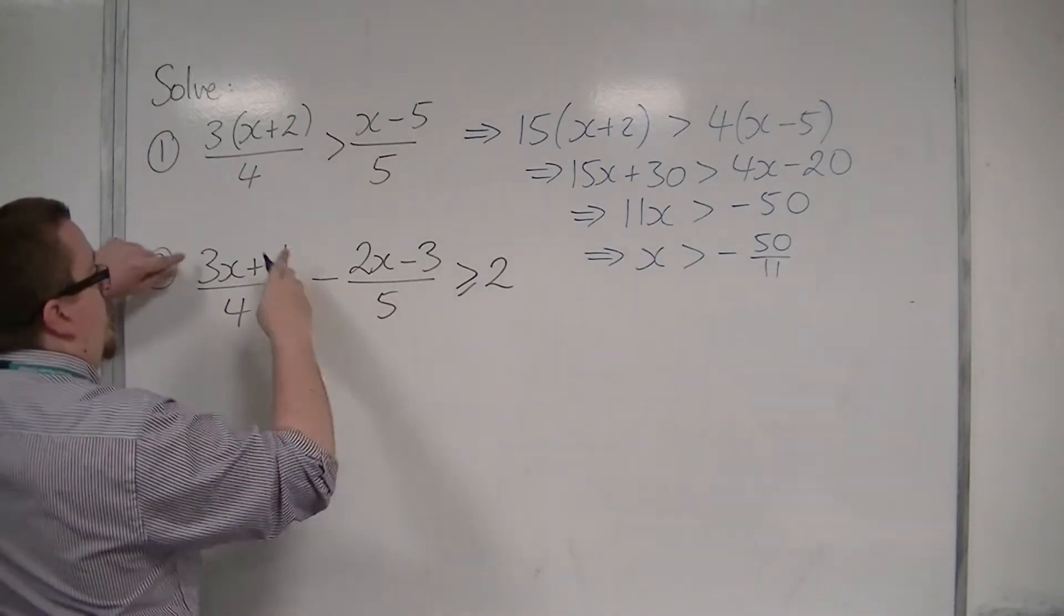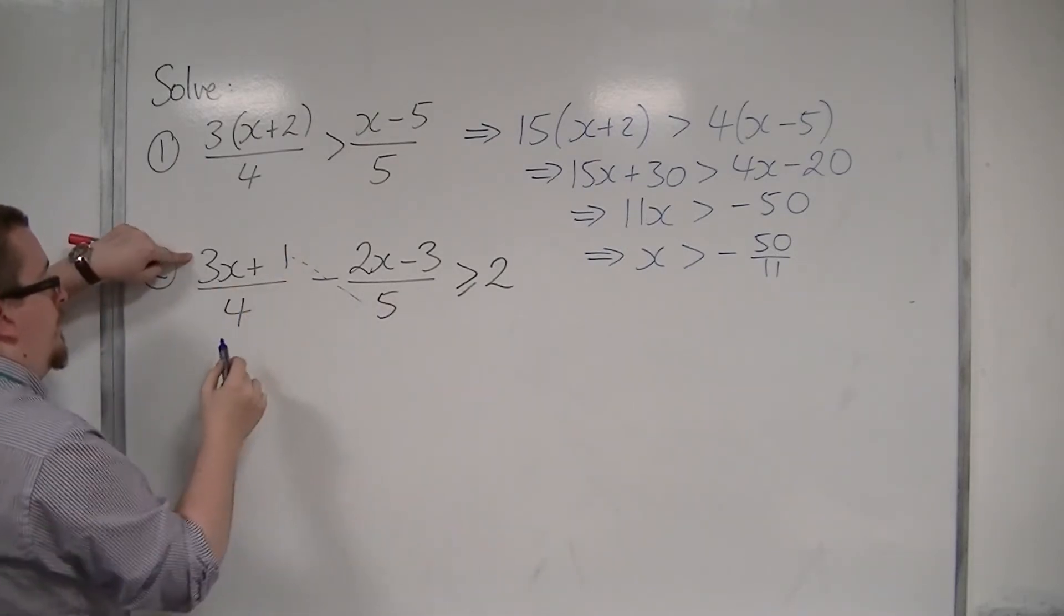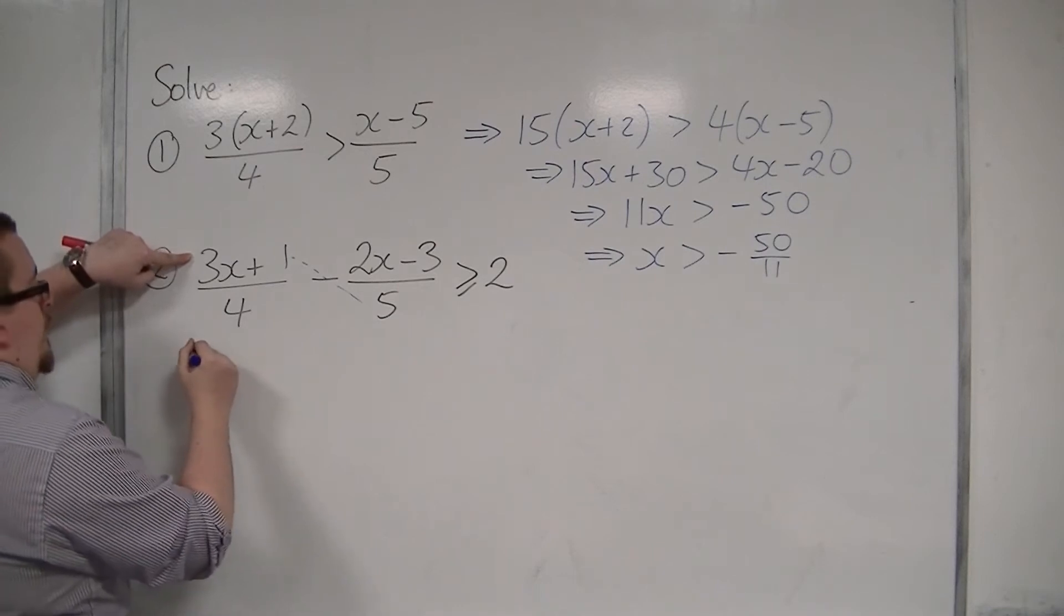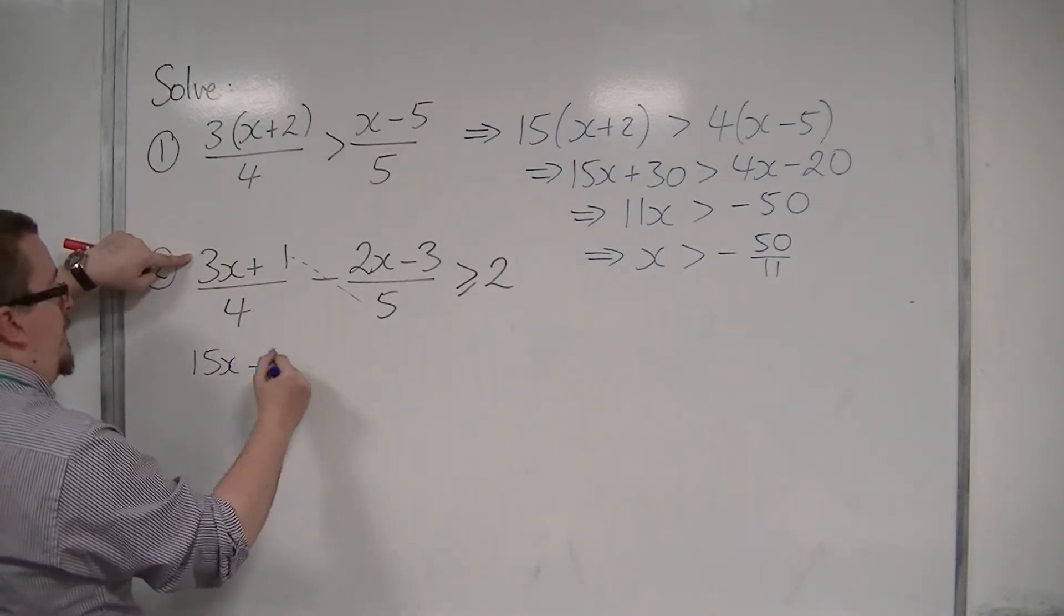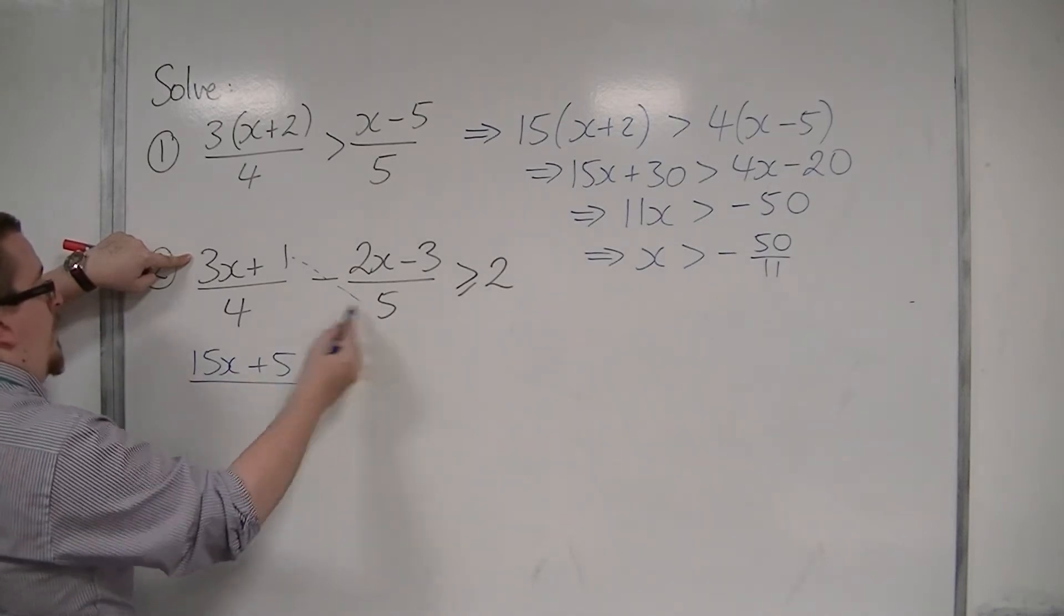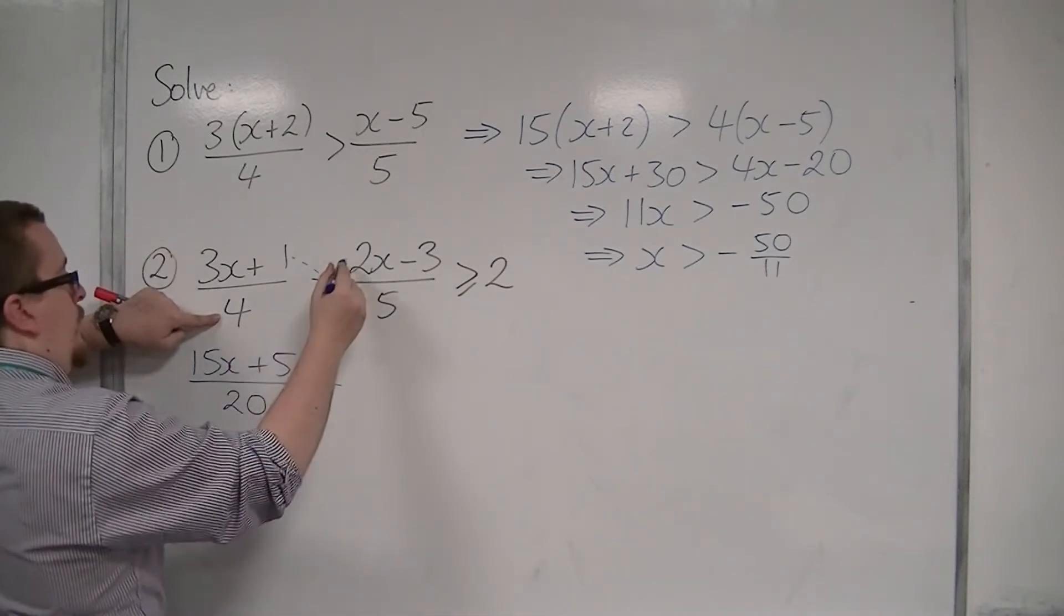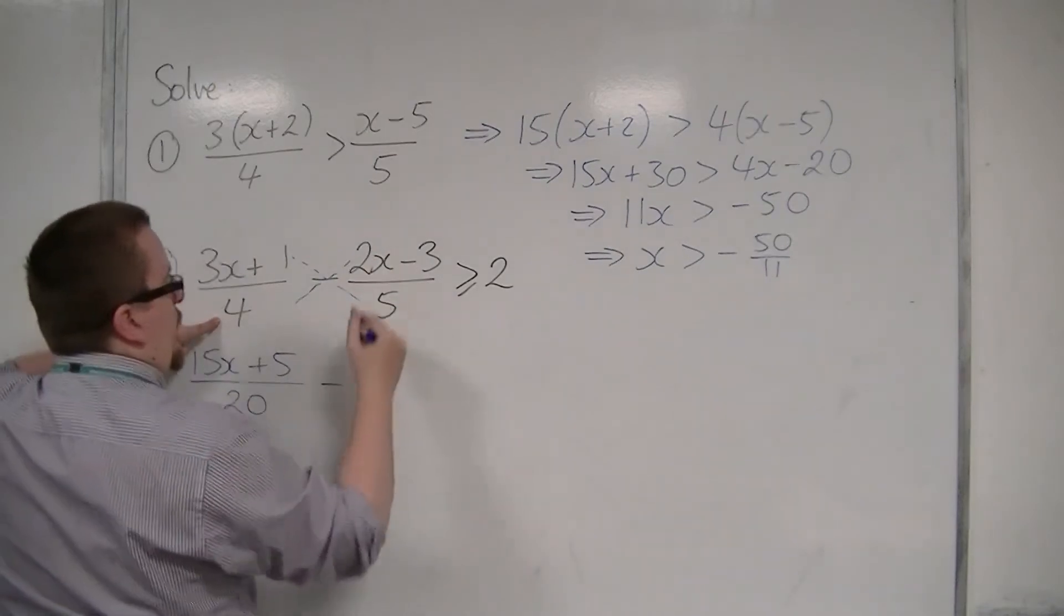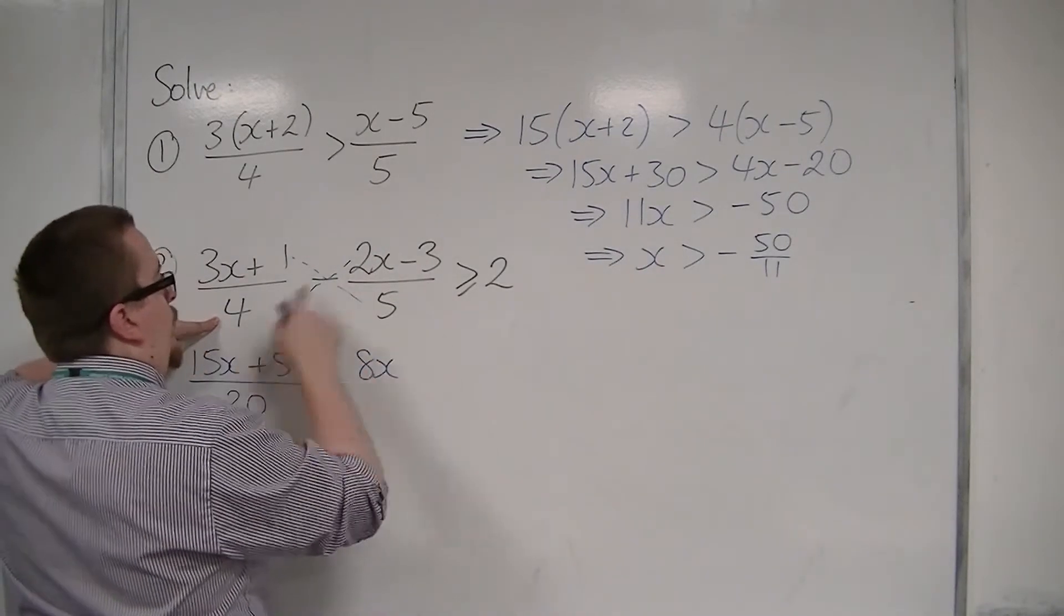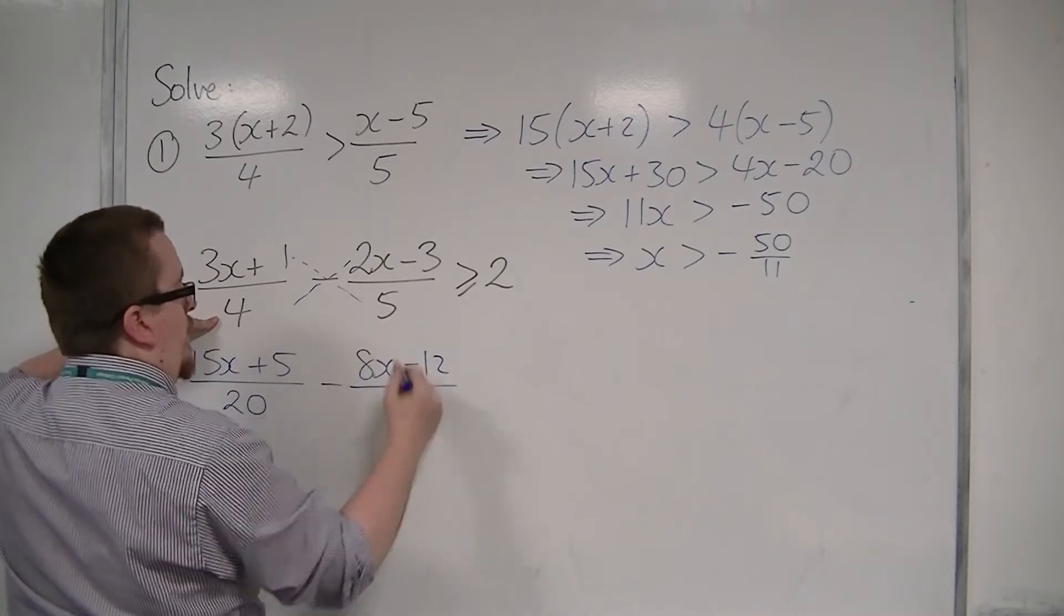So I'm going to multiply this by 5, so I'm going to have 5 lots of 3x, so 15x plus 5, all over 5 times 4, so 20. Take away 4 times these two terms, so 4 lots of 2x is 8x, 4 lots of minus 3 is minus 12, and that's all over 20.